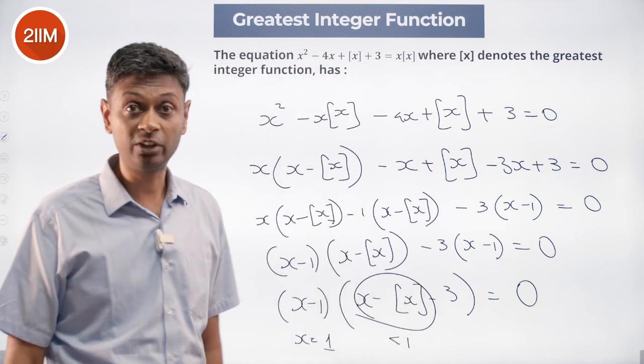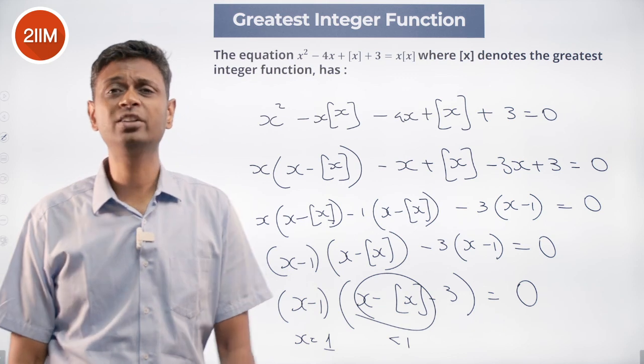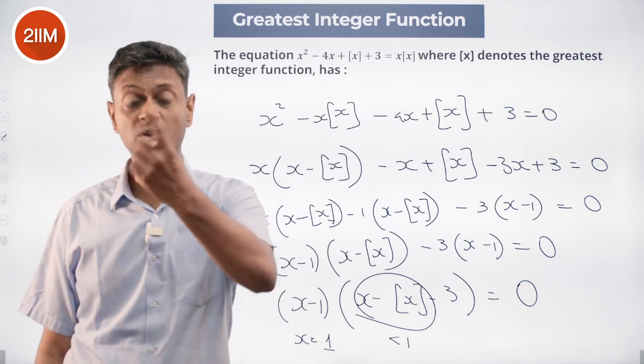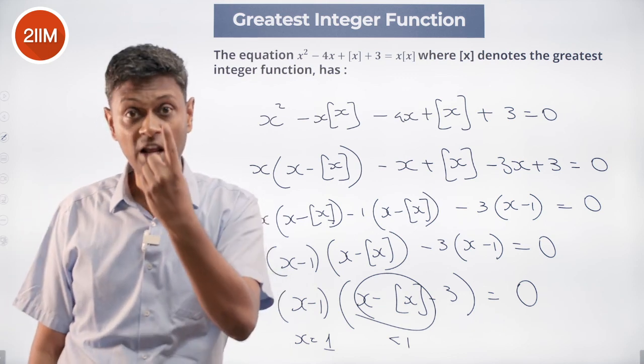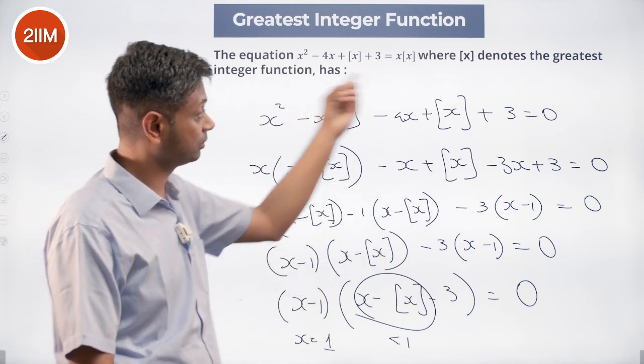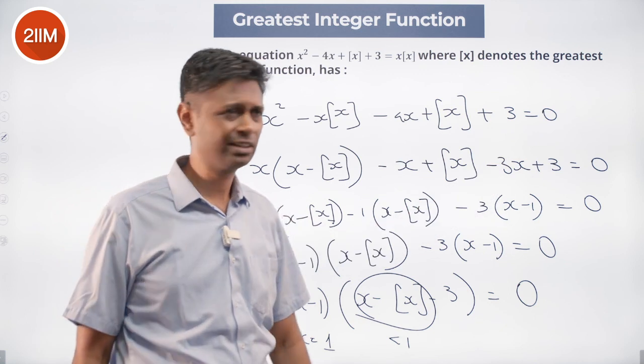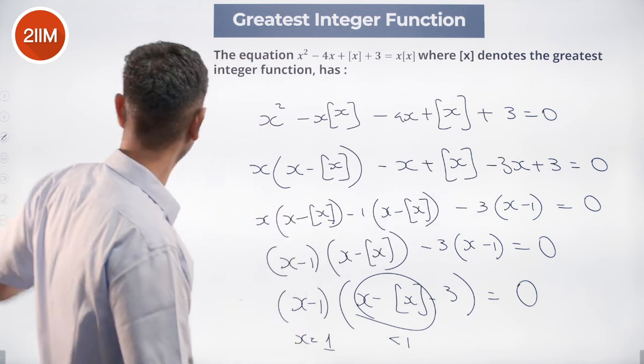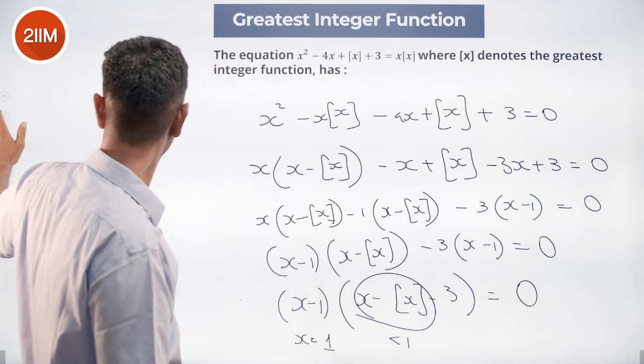So this second factor cannot go to 0 at all. Only x minus 1 can go to 0, at x equals 1. So x equals 1 is the one and only solution.